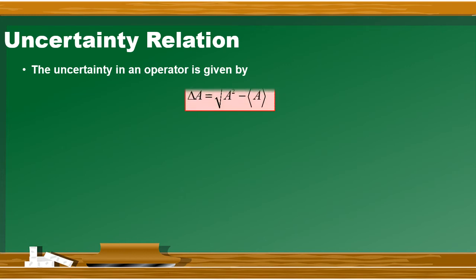کتنی variation possible ہے اسکو ایک mathematical relation سے لکھا جاتا ہے۔ اگر operator A ہے اور وو کسی wave function پر operate کیا جاتا ہے، تو uncertainty mathematically equal ہوگی: √(⟨A²⟩ − ⟨A⟩²)۔ اس کا مطلب ہے کہ آپ wave function پر A² operator apply کرتے ہیں اور A operator بھی apply کرتے ہیں — دونوں کی expectation values لی جاتی ہیں، ان کا difference نکالا جاتا ہے، اور پھر square root لیا جاتا ہے۔ That is the mathematical formula for the uncertainty.